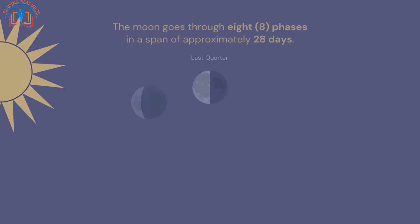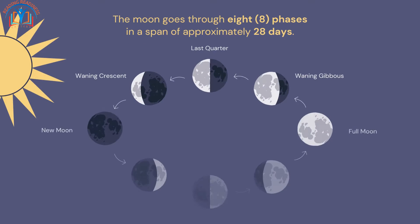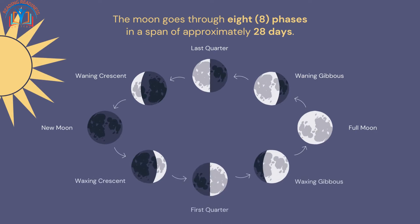The moon goes through eight phases in a span of approximately 28 days: new moon, waxing crescent, first quarter, waxing gibbous, full moon, waning gibbous, last quarter, and waning crescent.